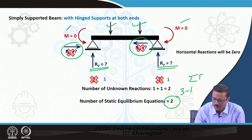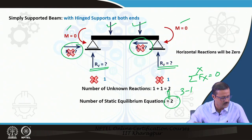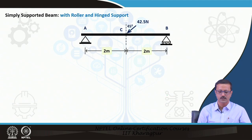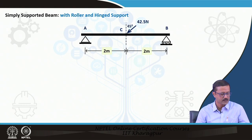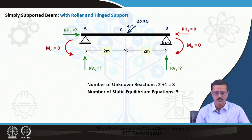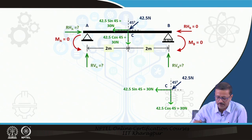For a simply supported beam with an inclined force of 42.5 kN at 45 degrees, the force is resolved into components. The unknowns are the horizontal reaction at A, the vertical reaction at A, and the vertical reaction at B — 3 unknowns matching 3 equations, so this structure can be solved. Let us solve it.